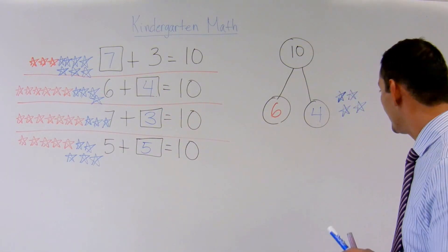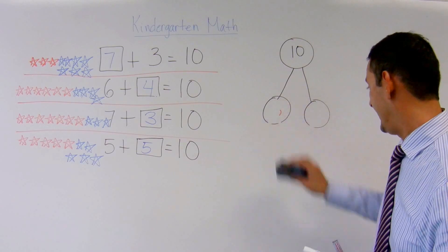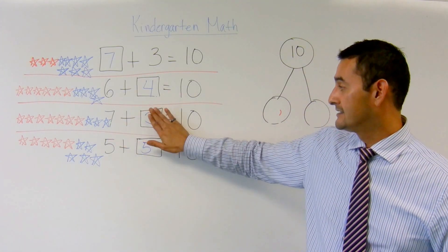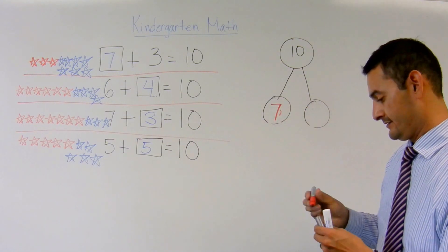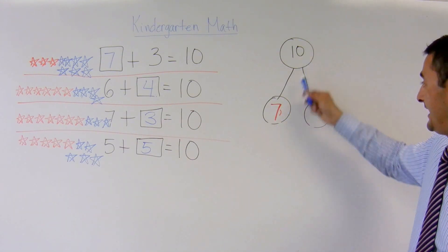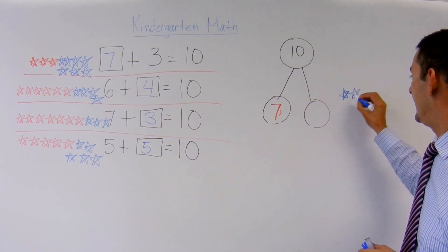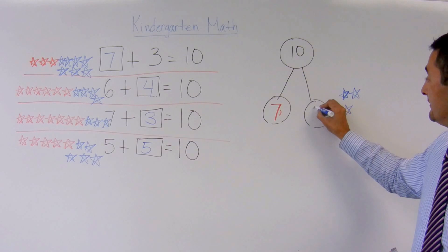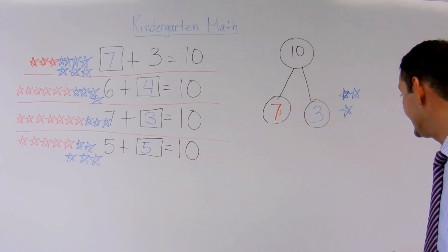Let's do another example. In this example, I have 7 plus something equals 10. I'm going to write 7 right here and then count up to 10. 7, 8, 9, 10. How many do I have here? 1, 2, 3. So 7 plus 3 equals 10. We just bonded those two numbers to make 10.